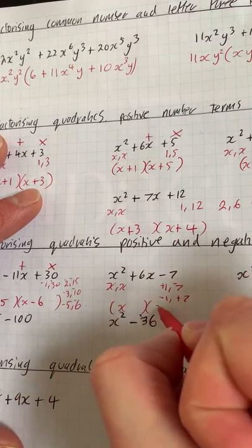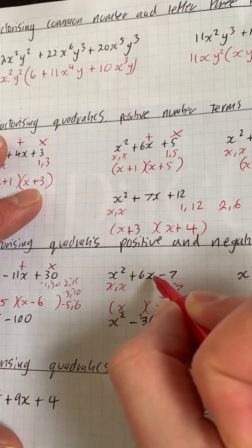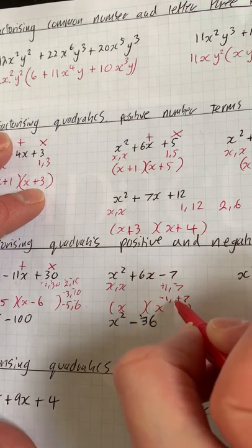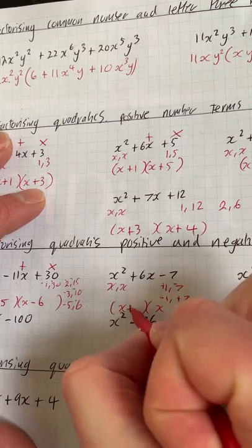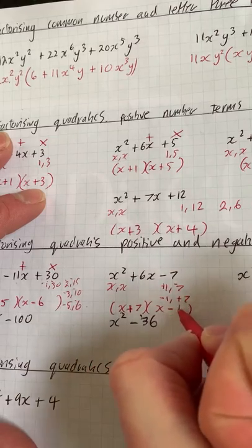So we've got x and x, we need 6, so that means that we need to use this one here where we've got plus 7 and we take away 1.